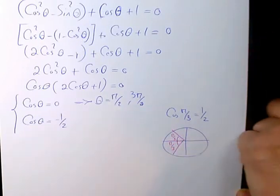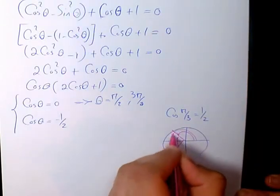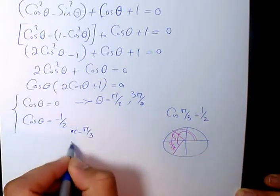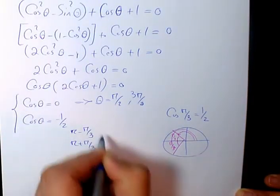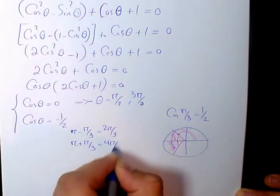So the two answers are going to be π - π/3 and π + π/3. So we have π - π/3 and π + π/3. That will be 2π/3. Here will be 4π/3.